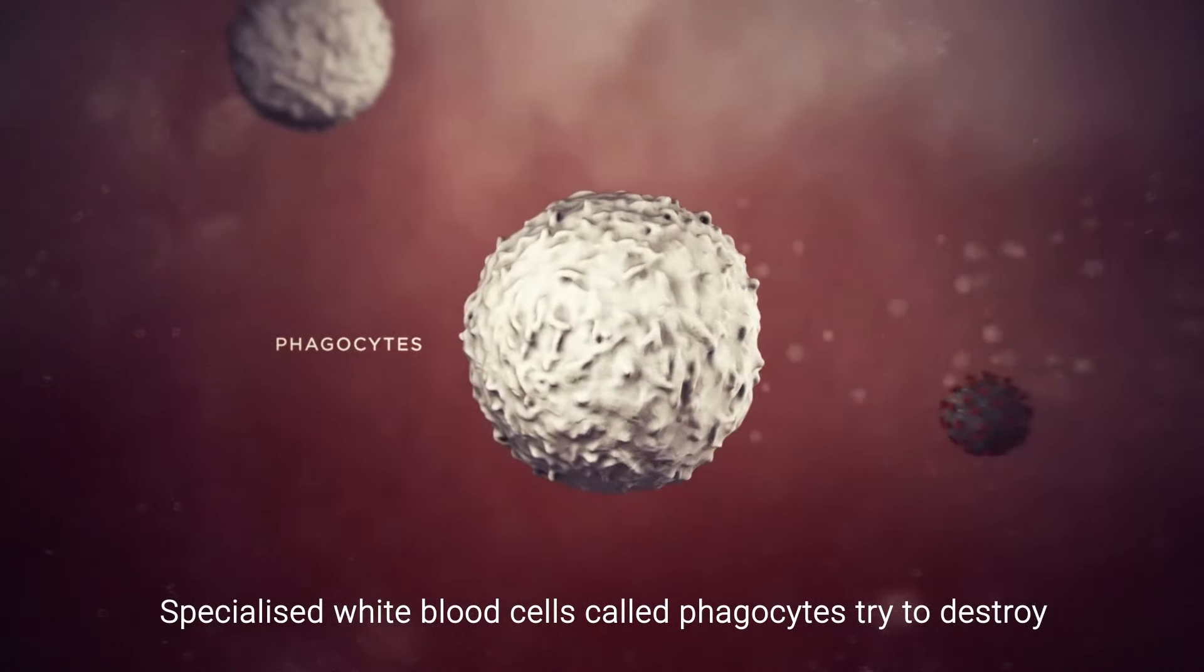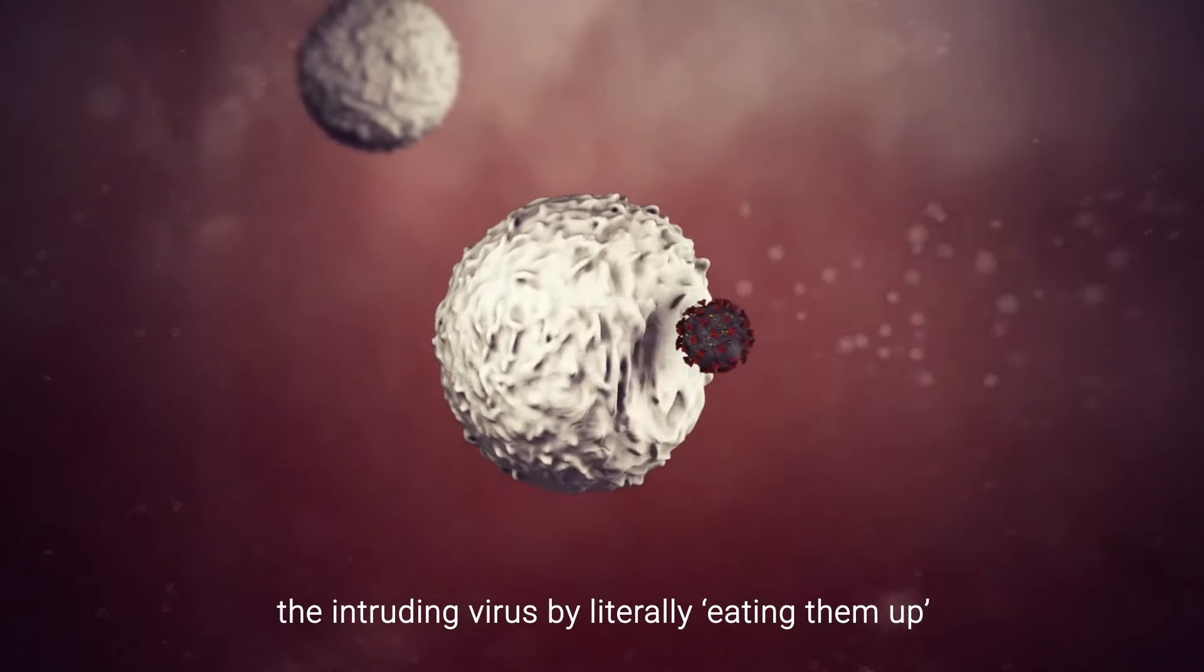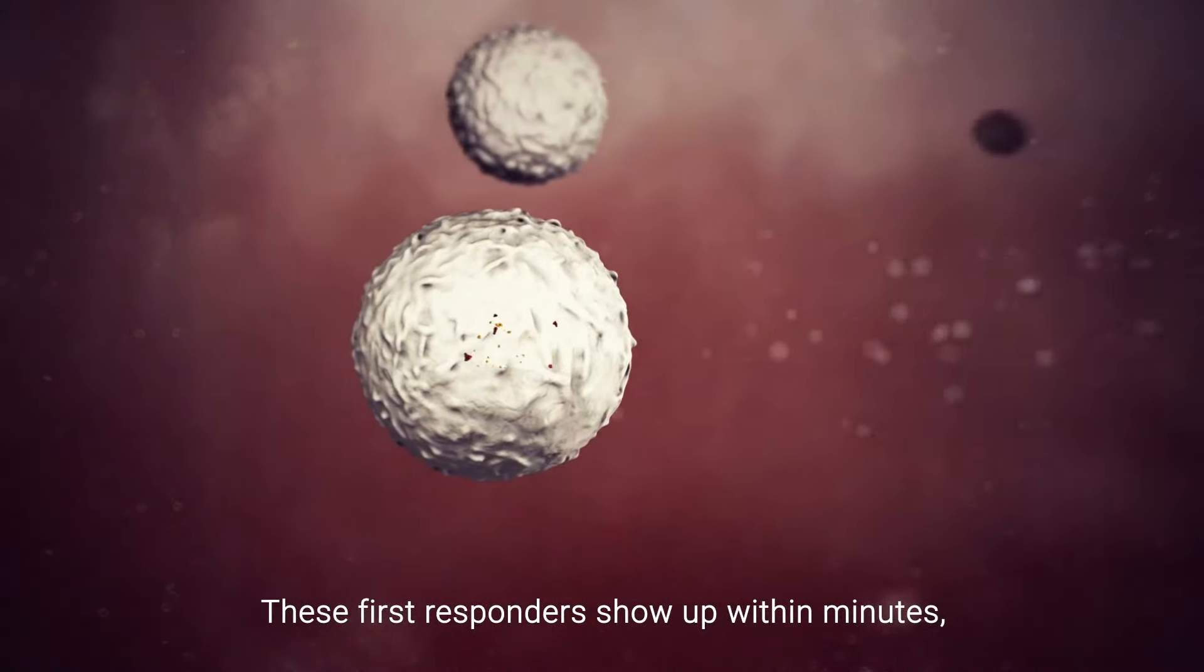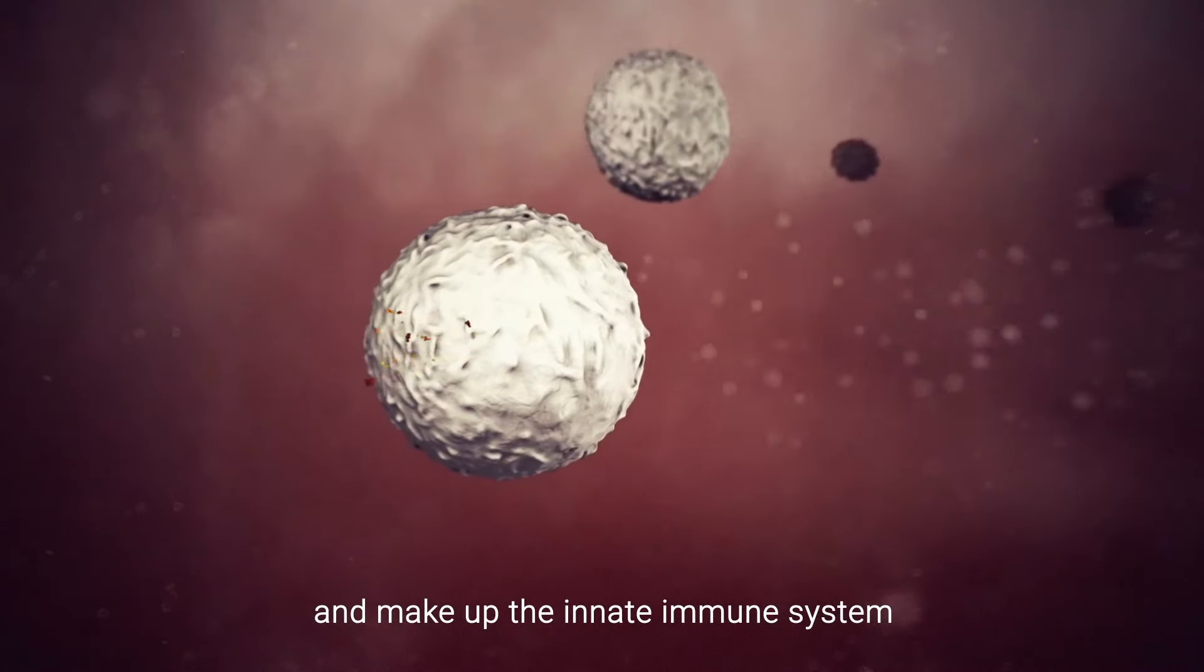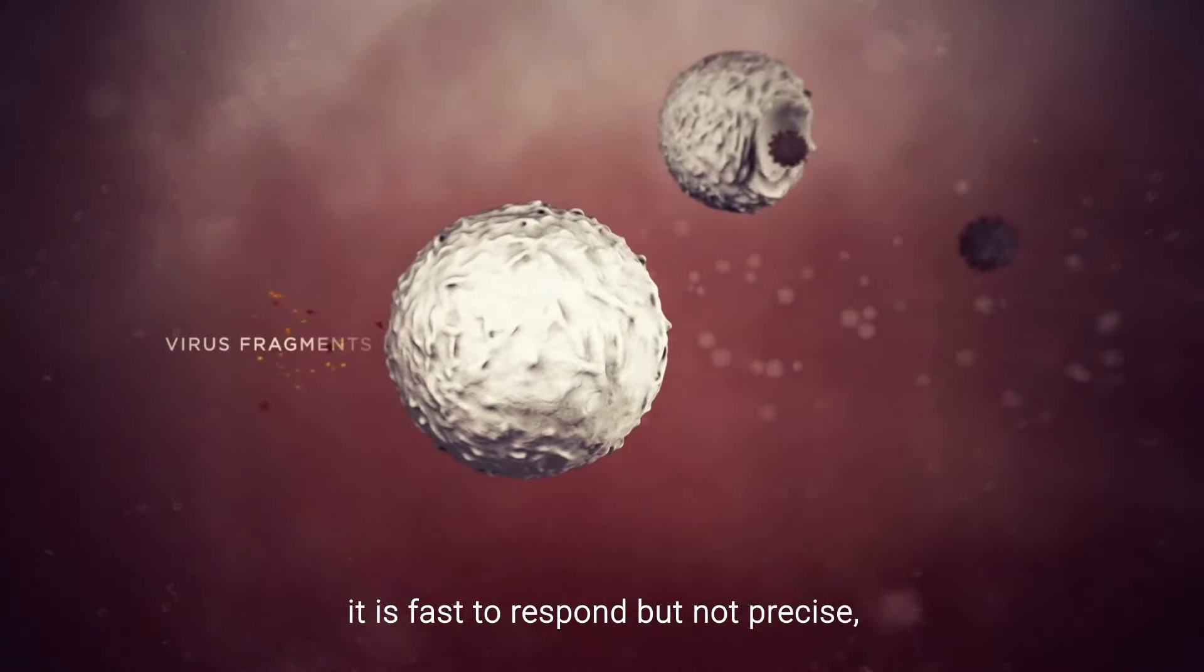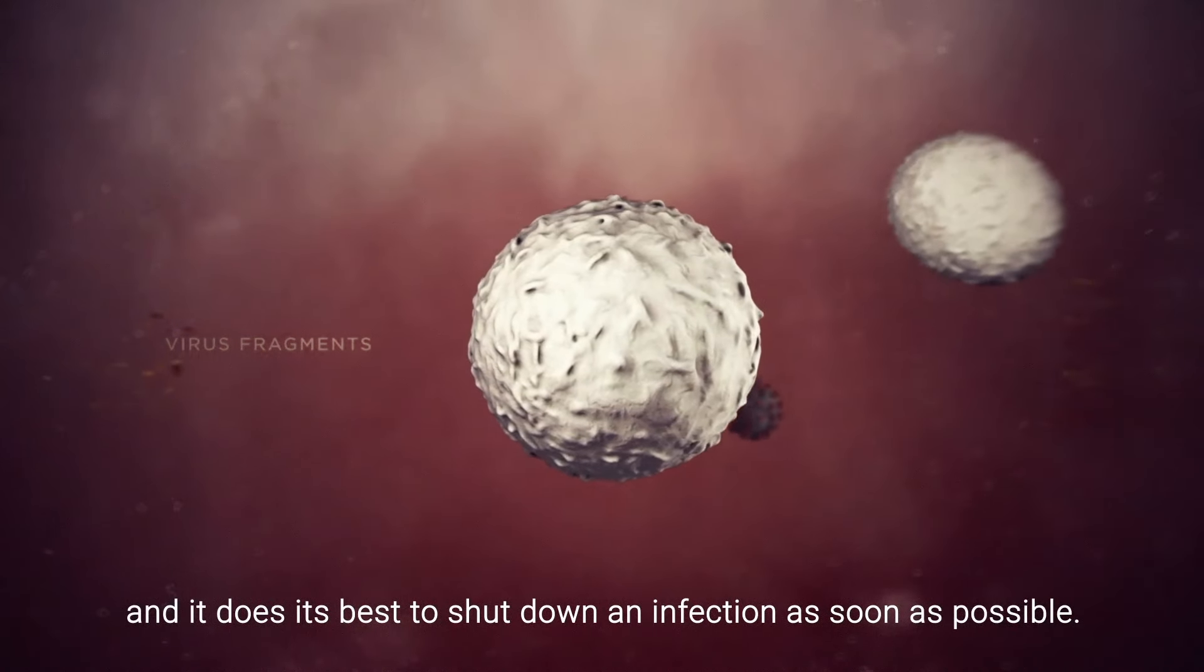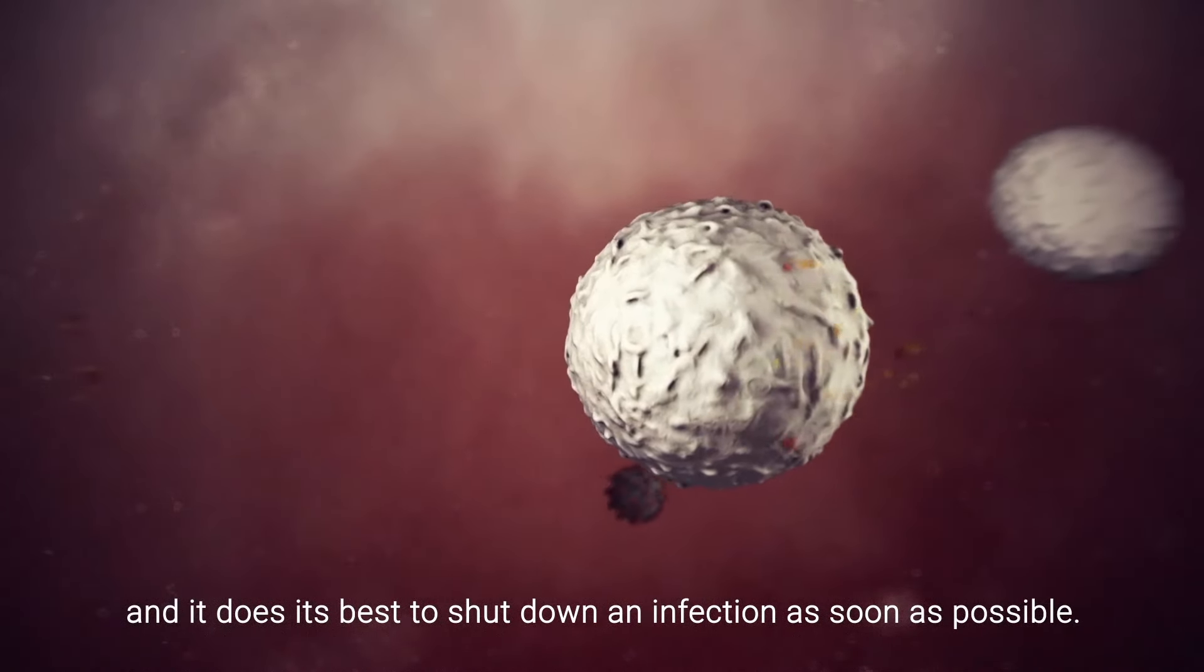Specialized white blood cells called phagocytes try to destroy the intruding virus by literally eating them up. These first responders show up within minutes and make up the innate immune system. It is fast to respond but not precise and it does its best to shut down an infection as soon as possible.